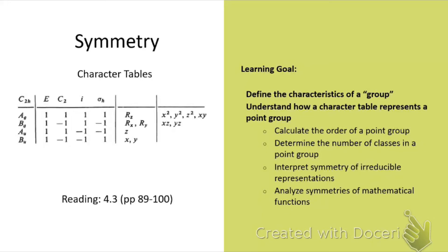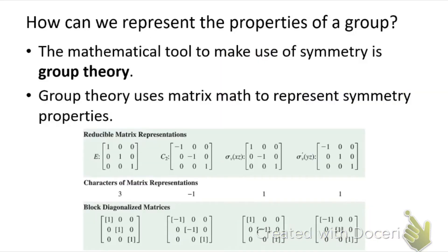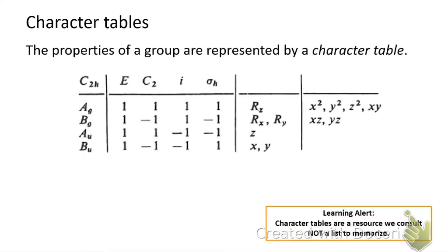Here we're going to talk about how a character table can be used to represent the properties of a group. The mathematical tool we use to represent symmetry is called group theory, and group theory uses a lot of matrix math as the representation of those symmetry properties. The properties of a group in group theory can be represented by a character table — each point group has its own character table.